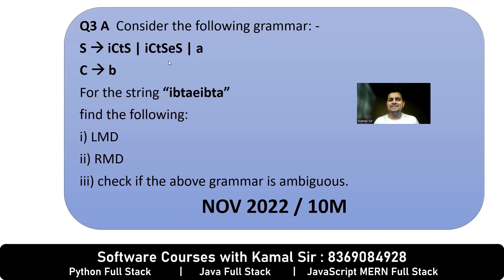The question is very simple. Question 5a is: Consider the following grammar and for the given string, you have to find LMD, RMD, and you have to check whether the grammar is ambiguous.